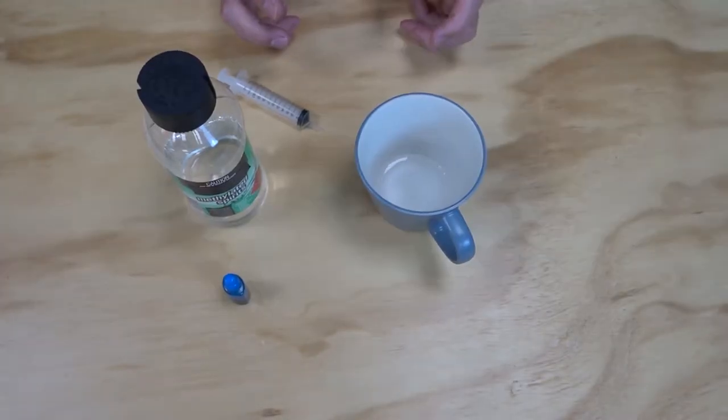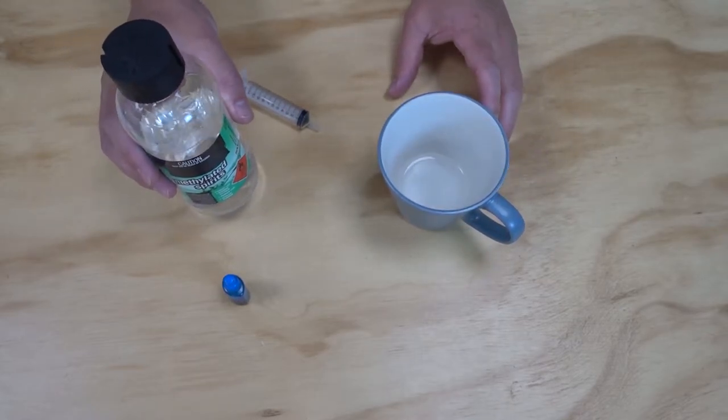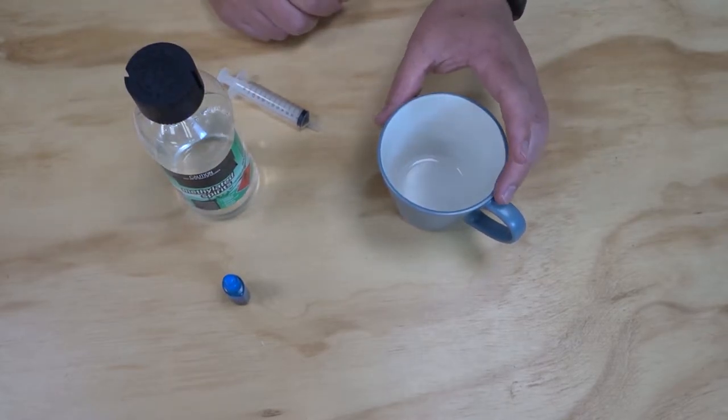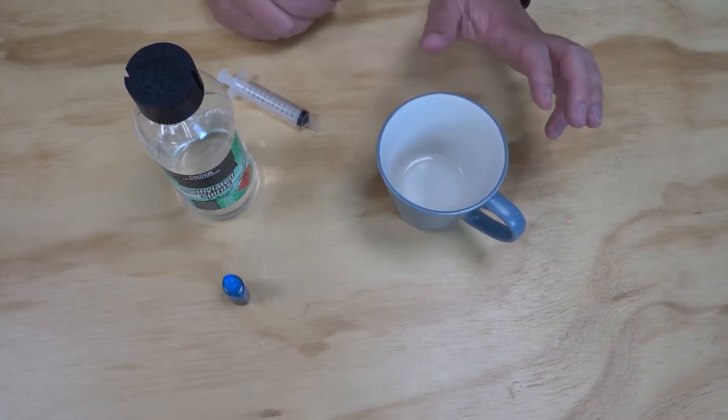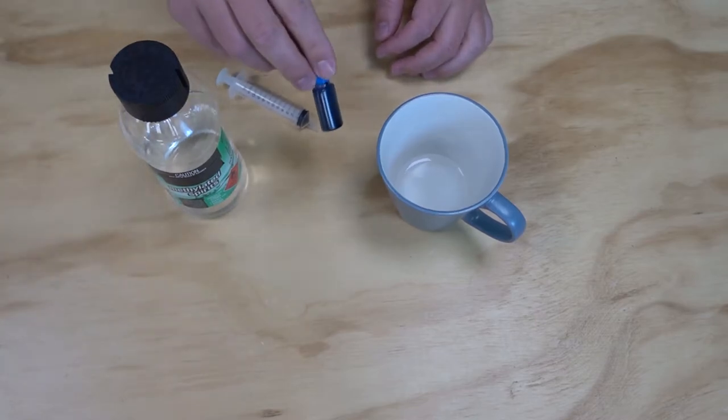Next I need to make the liquid to go into the thermometer. To do that I need equal parts water and methylated spirit or rubbing alcohol. So in my cup here I know I've got 30 mils of water, so I need to add in 30 mils of methylated spirit. I'm also going to add in some food dye to make my water a little bit easier to see.